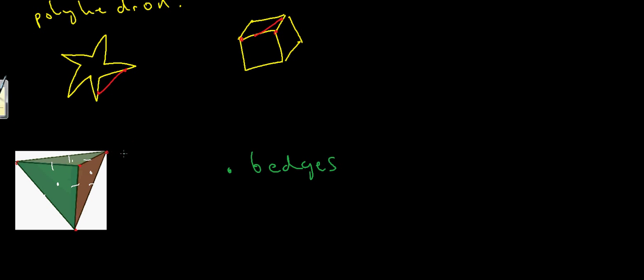And how many vertices does it have — how many corners? We've got one, two, three, four — so that's four vertices. And finally, how many faces does it have? We've got one, two, three, four. The fourth one you can't actually see, it's in the background, but it has four equilateral triangle faces — so four faces.